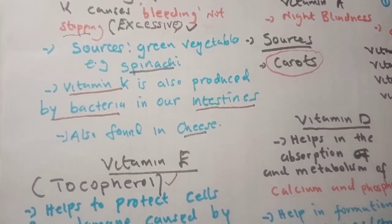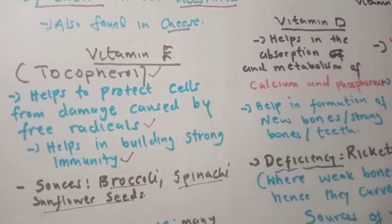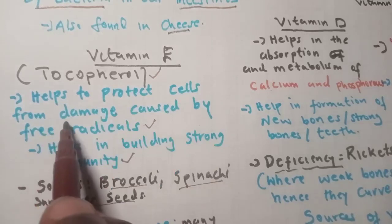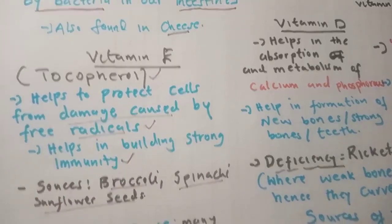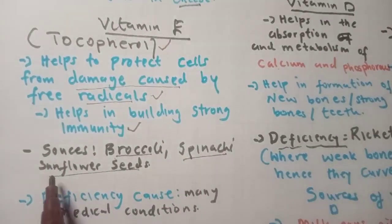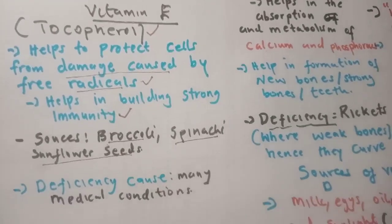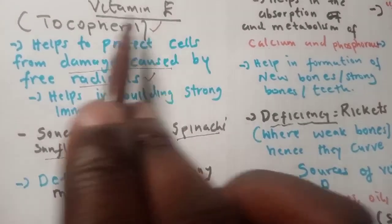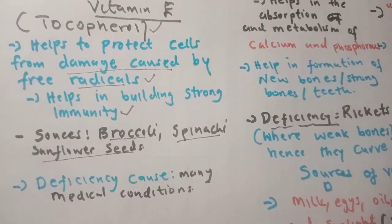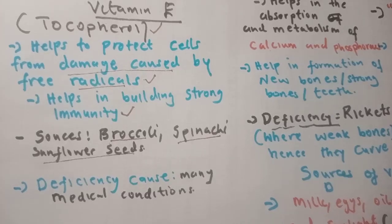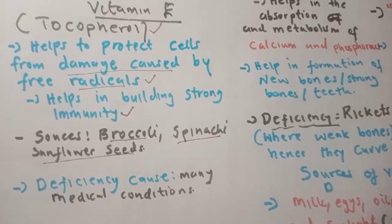Vitamin E, also known as tocopherol, helps protect cells from damage caused by free radicals and helps build the immune system. Sources include broccoli, spinach, and sunflower seeds. Deficiency can result in a number of diseases since it protects your cells from free radical damage.